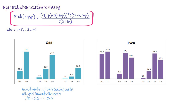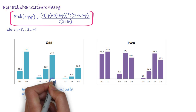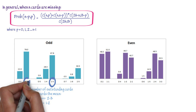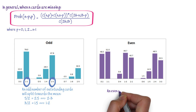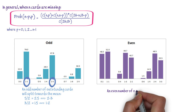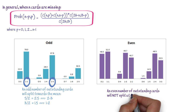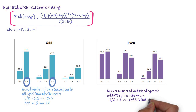An odd number of outstanding cards will likely split towards the mean. The mean of 5 is 2.5, so they will split 2-3. The mean of 3 is 1.5, so they will split 1-2. The mean of 4 is 2, but they will not split 2-2.